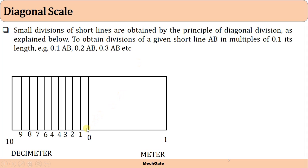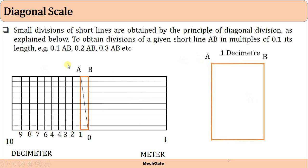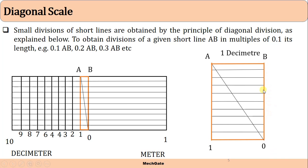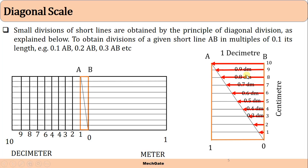Small divisions are obtained using diagonal lines. Let's look at a rectangle shown on a larger scale — AB indicates one decimeter. If we join a diagonal line from A and divide the height into 10 equal parts, using the diagonal line we are proportionally dividing this length into 10 equal parts. Being AB equal to one decimeter at the top, below that it is 0.9 decimeter, then 0.8, and so on down to zero decimeter.